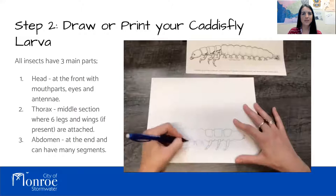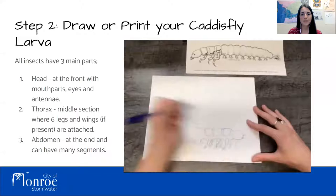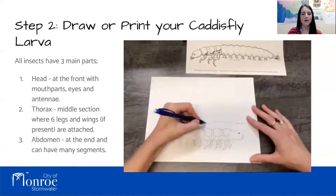Right now I'm adding feathery parts called gill tufts. They use gills to breathe oxygen dissolved in the water when they're larvae, just like fish. Now I'm going to add the eyes. That part's the head, that part's the thorax, and that part's the abdomen.